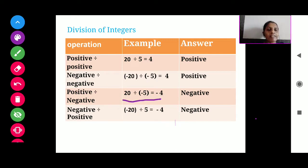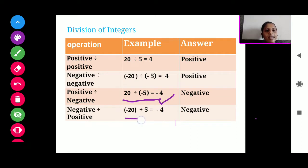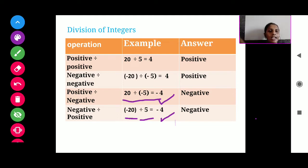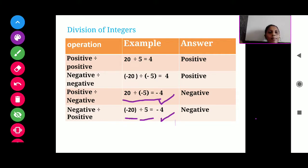If the negative sign appears an odd number of times, for example when positive is divided by negative, the negative sign is only once and 1 is an odd number, so our answer will have a negative sign. Similarly, when our dividend is negative and our divisor is positive, the negative sign is once, so our answer will have a negative sign. To summarize: positive divided by positive gives positive, negative divided by negative gives positive, positive divided by negative gives negative, and negative divided by positive also gives negative.